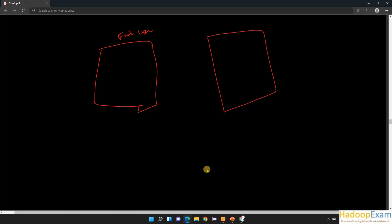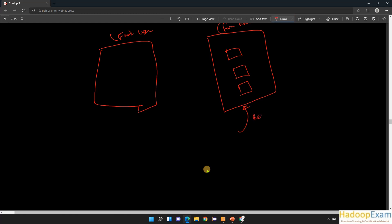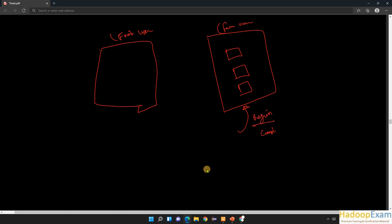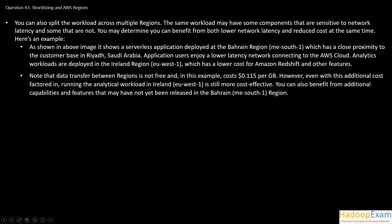If a workload is not affecting front-end users, deploy it in one region. The workloads which do affect front-end users should go in another region. Services that affect front users should be deployed in a region optimized for compliance, cost, and latency. Services not affecting front users can be deployed in a lower-cost region where high latency would not matter. You can benefit from both lower network latency and reduced cost at the same time.